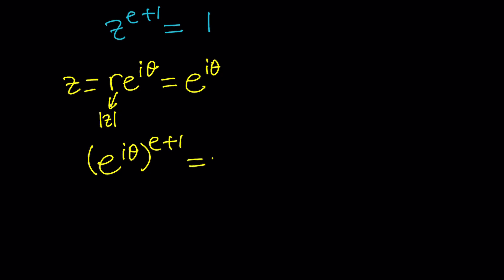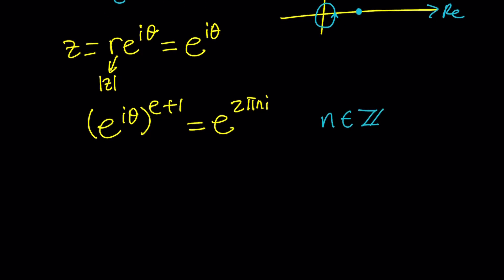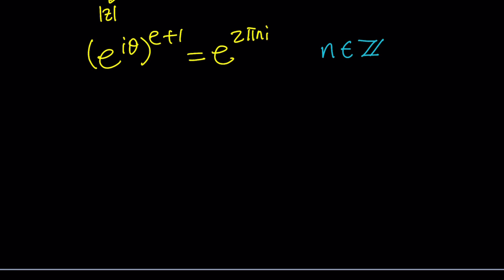We can replace 1 with E to the power 2 pi n I. If you think about 1 on the complex plane, it's on the real axis, because it's a real number. The angle it makes is basically 0 or 2 pi or 4 pi radians. In other words, it's a multiple of 2 pi, so n is an integer. So we have this equality.